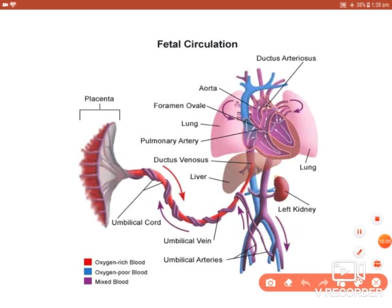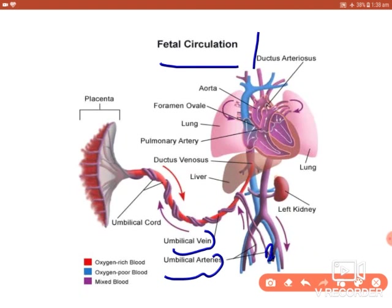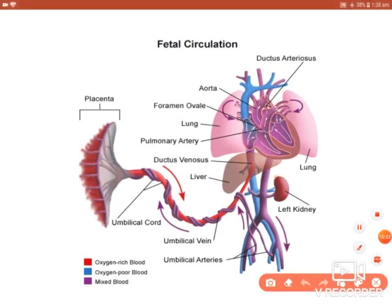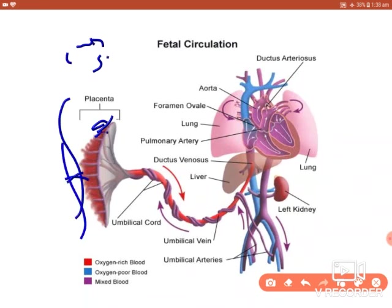Coming to fetal circulation: there are temporary structures in the fetus that help with fetal circulation. These are the umbilical vein, umbilical arteries, the hypogastric artery, foramen ovale, ductus arteriosus, and ductus venosus. The placenta is formed by trophoblast cells. The maternal surface is attached to the uterine wall, and the fetal surface faces the fetal side.